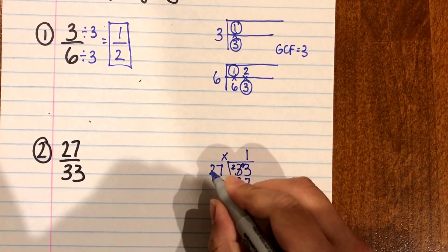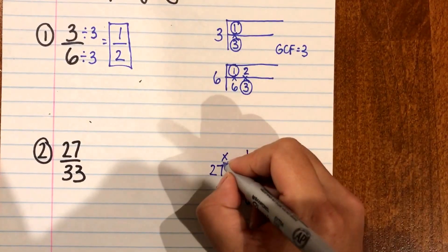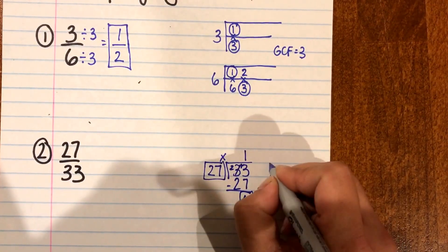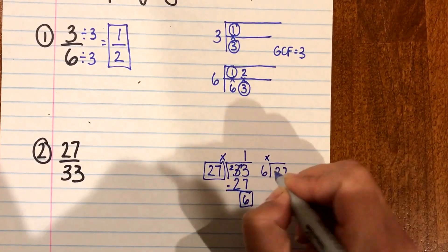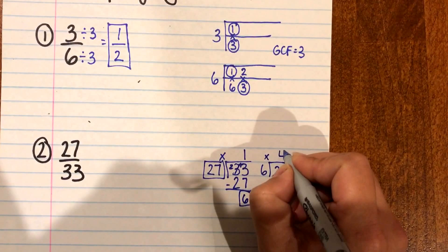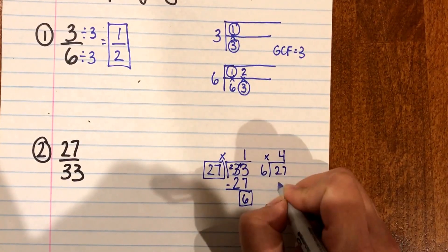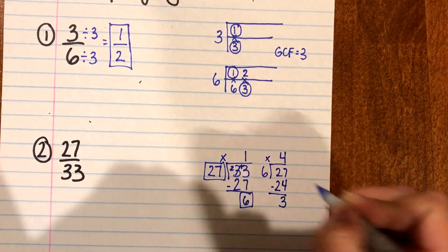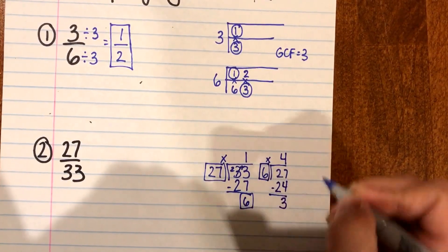All right so I have a remainder of 6 and 27 is my divisor so I need to continue. Okay so 27 divided by 6. 6 times I know 4 is going to give me 24 which is close. So 4 times 6 is 24. If I subtract I get 3 and I need to keep going because I have a remainder.